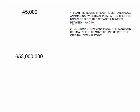Let's look at another example. Scan the number from the left and place your imaginary decimal point after the first non-zero digit. Scanning in from the left, I put my imaginary decimal point right there, and that creates my number between 1 and 10: 4.5000. One of the reasons to do scientific notation is to not have to write all these zeros, so 4.5000 is the same as 4.5.